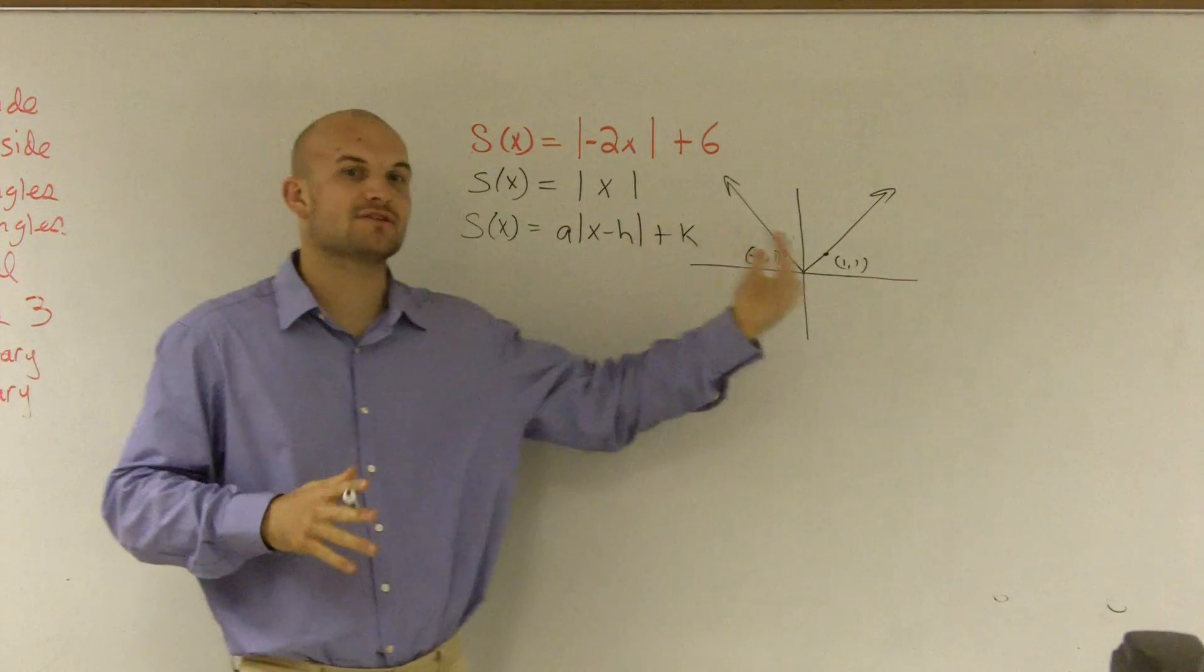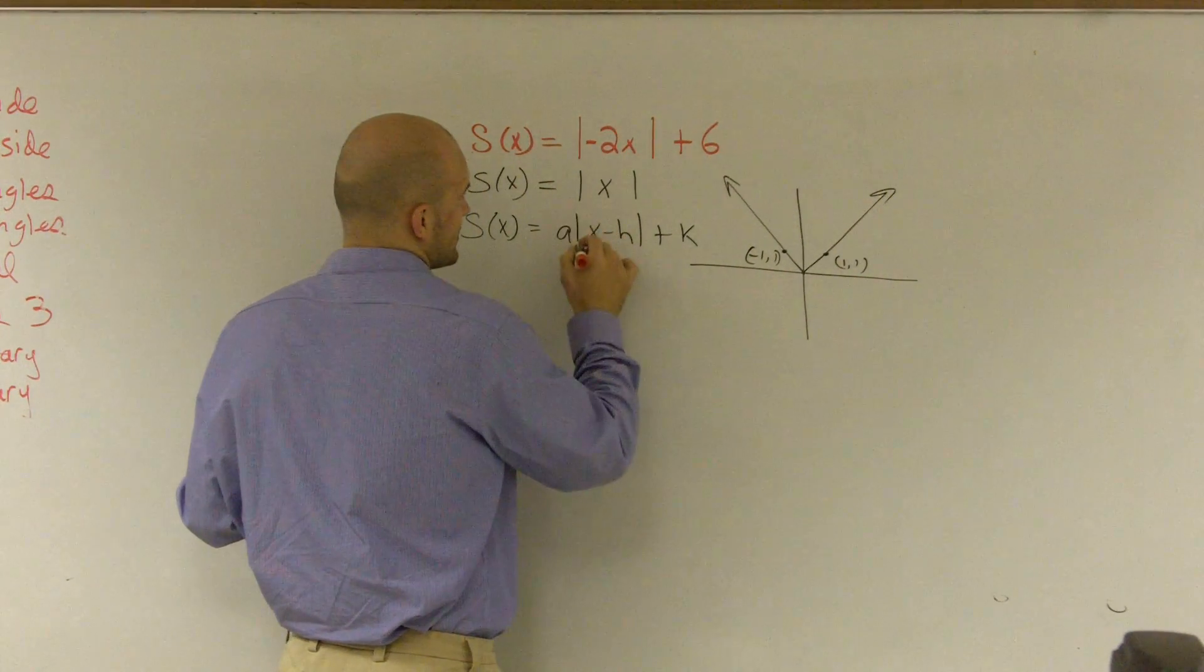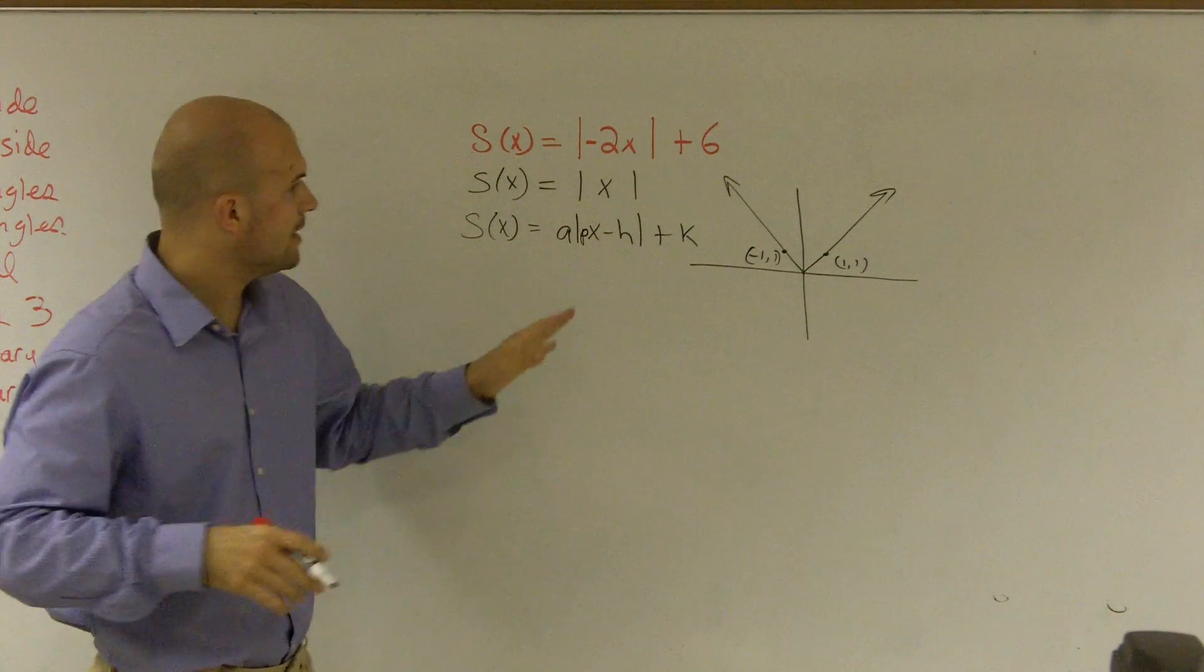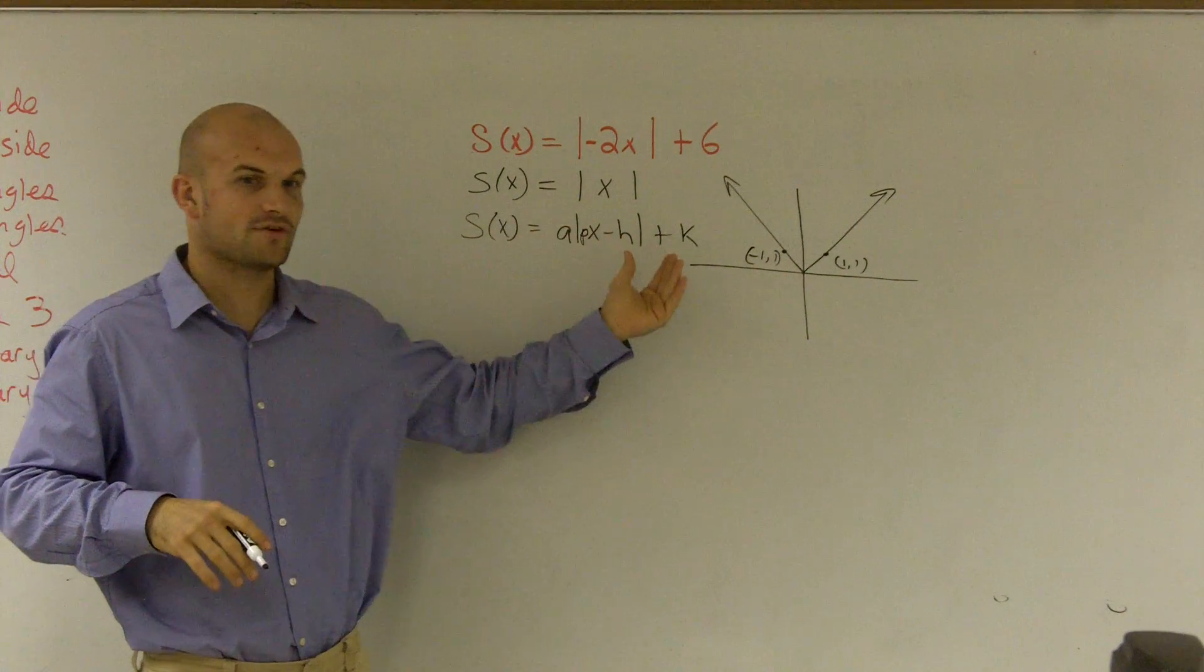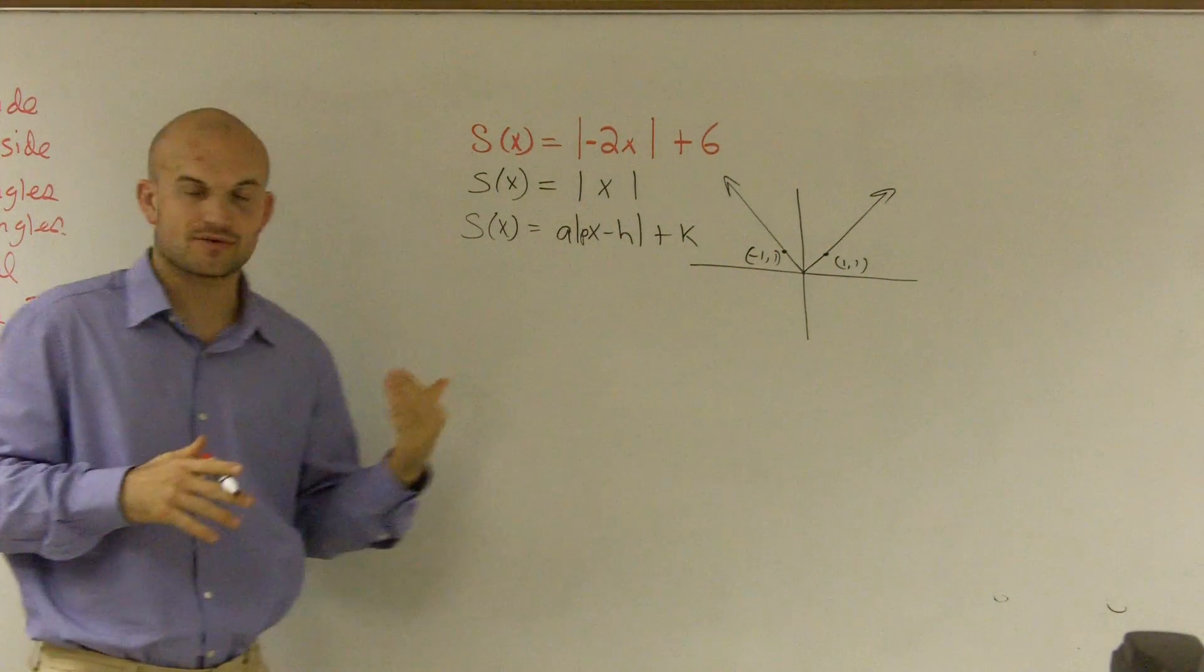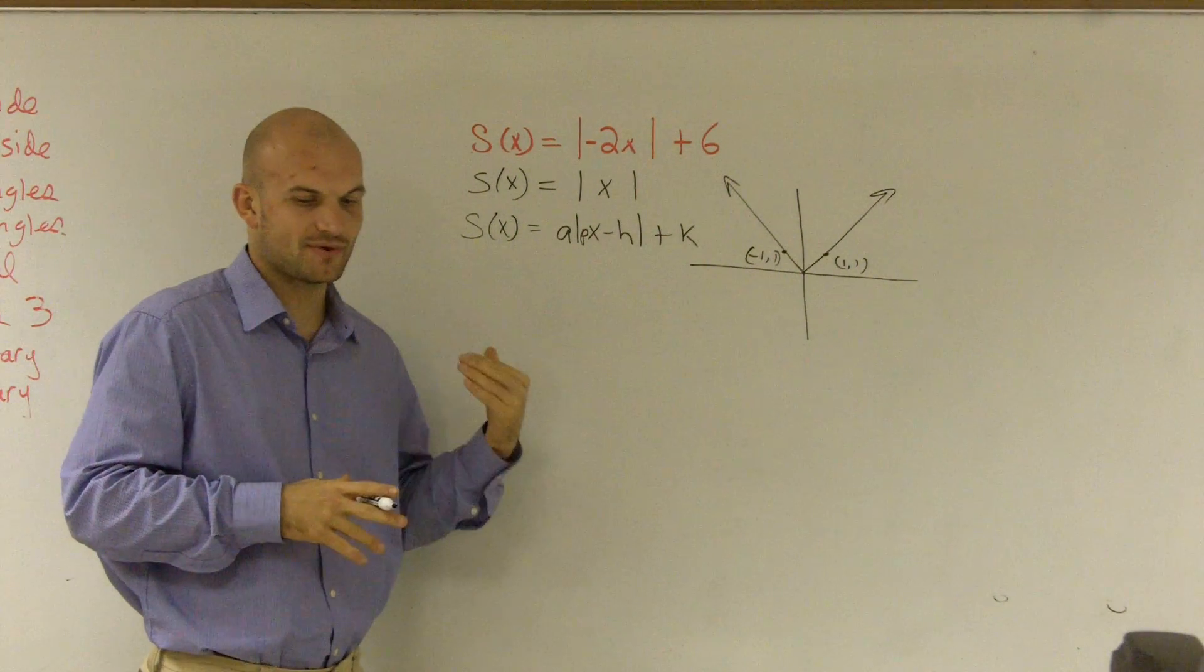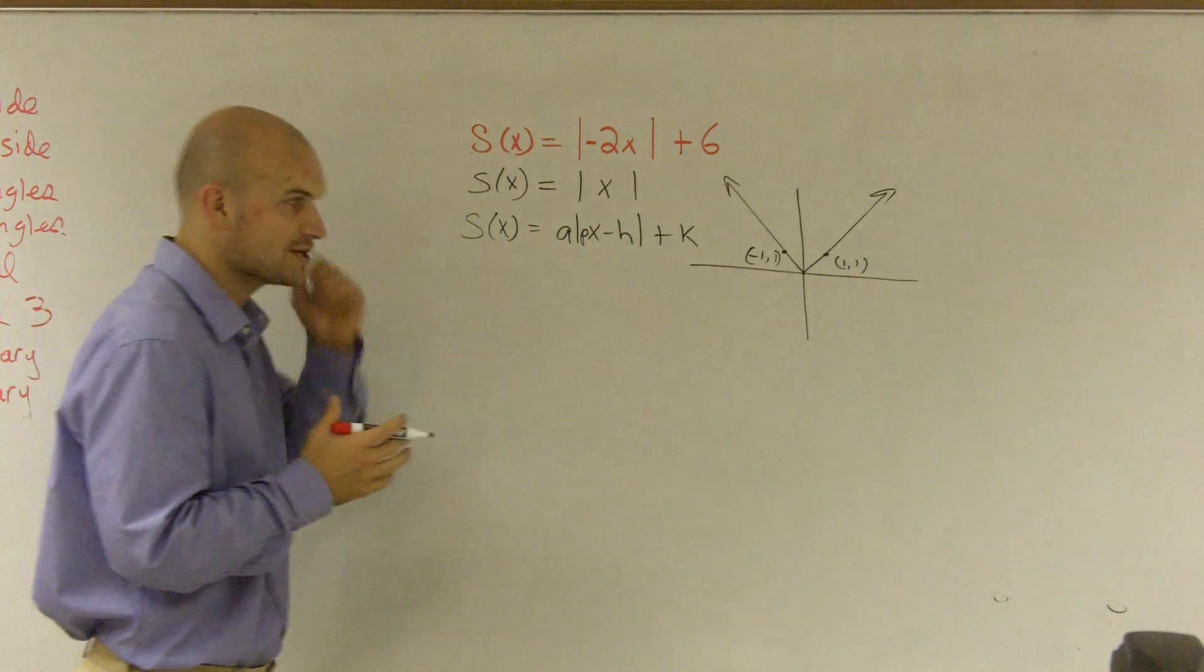And our h tells us to shift left or right. And actually, there's another one here. We can just use a p. And our h tells us to shift to left or right. When our h inside of it is negative, that means you're actually going to shift it to the right. And if it's negative, that means you're going to shift to the right, positive, you're going to shift it to the left. So it's actually the opposite when it's inside of the function.